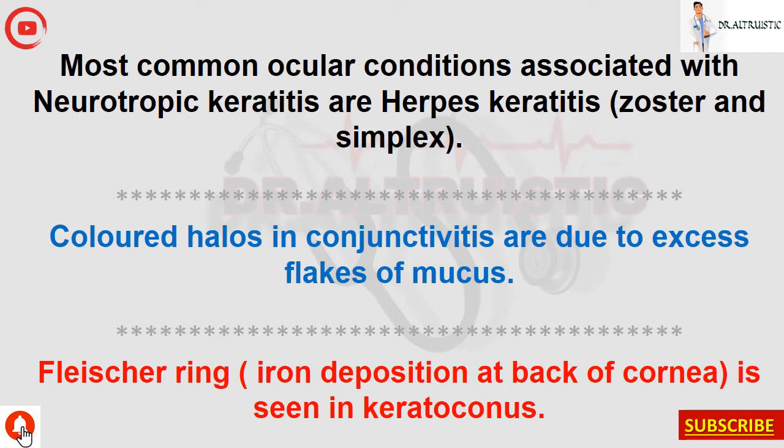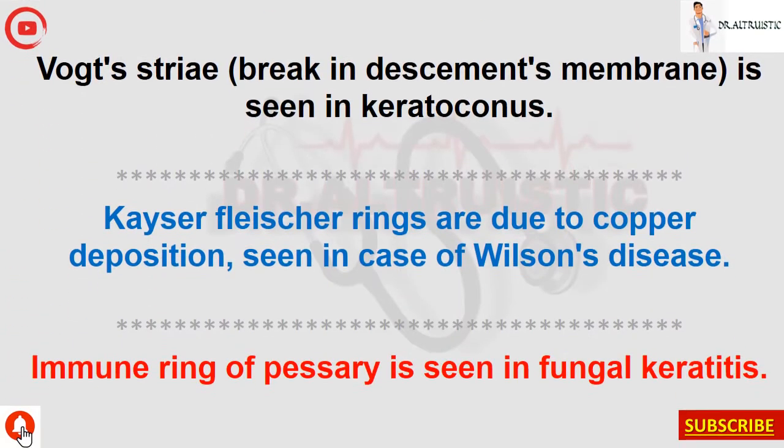Fleischer ring, iron deposition at the base of the cornea, is seen in keratoconus. Vogt's striae, breaks in Descemet's membrane, are also seen in keratoconus. Kayser-Fleischer rings are due to copper deposition, seen in Wilson's disease.